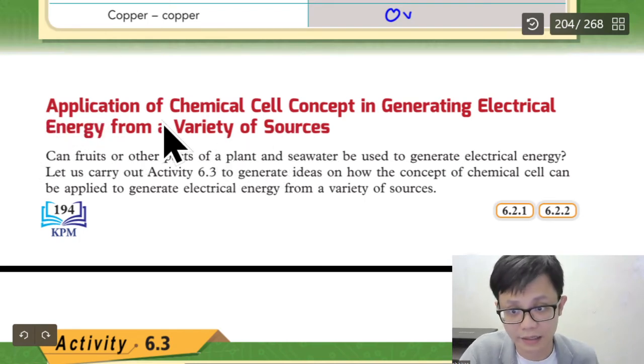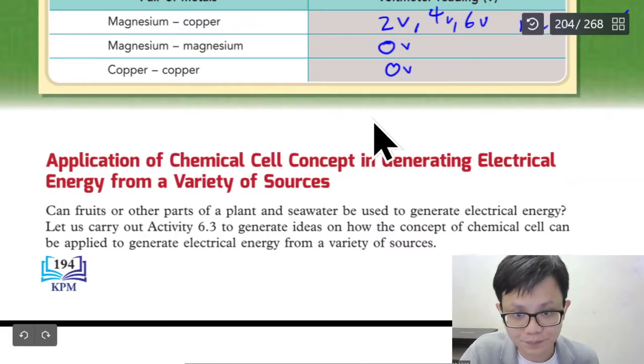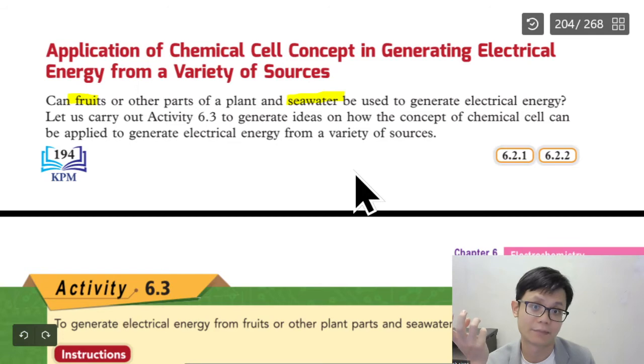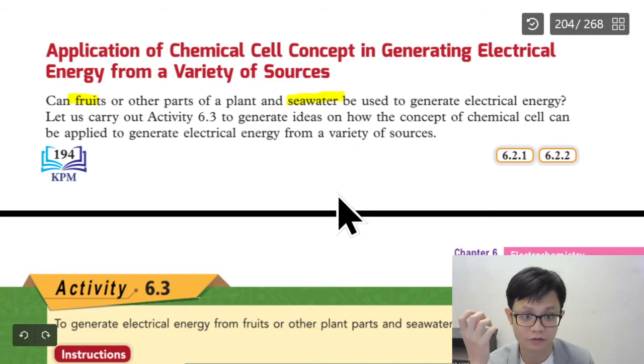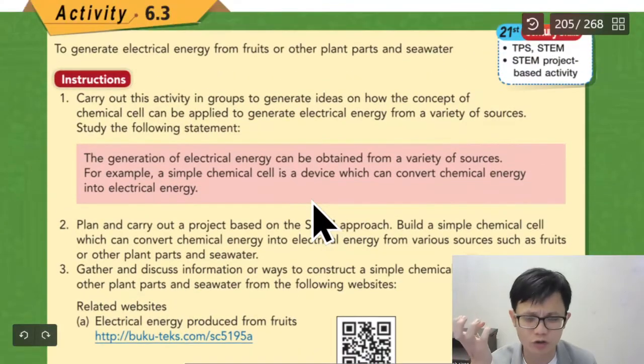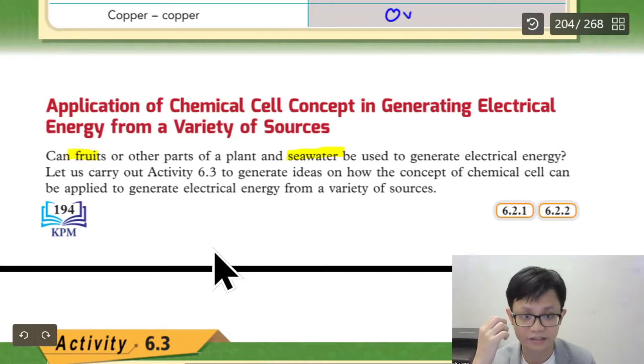Application of chemical cells. Now, I know already, I know how to make electric already. Of course, many things that we can do. And we can even use fruit and sea water. Let's say I cannot buy from Lazada, because I cannot buy from Shopee, because my mother said don't waste money. You can use potato, orange to generate electric.